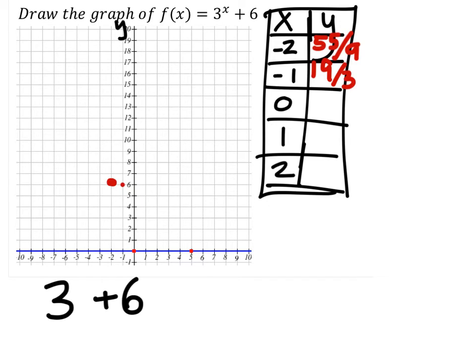Again, this is very close to 6 right here. And continuing this pattern, if we have 3 to the power of 0, that would give us 1 plus 6, which would be at 7. And clearly I put my point a little bit too low there. It should be a little bit higher on the graph.